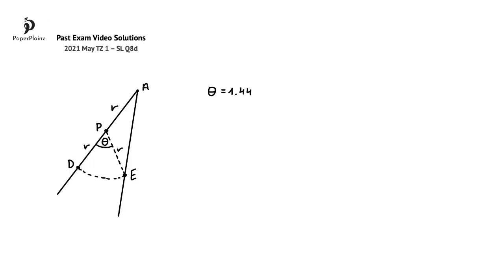In this question part, we have to find the size of angle DAE. Since this angle is on a straight line with theta, its value is pi minus theta, so pi minus 1.44. Remember that we have the value of theta from the previous question part.